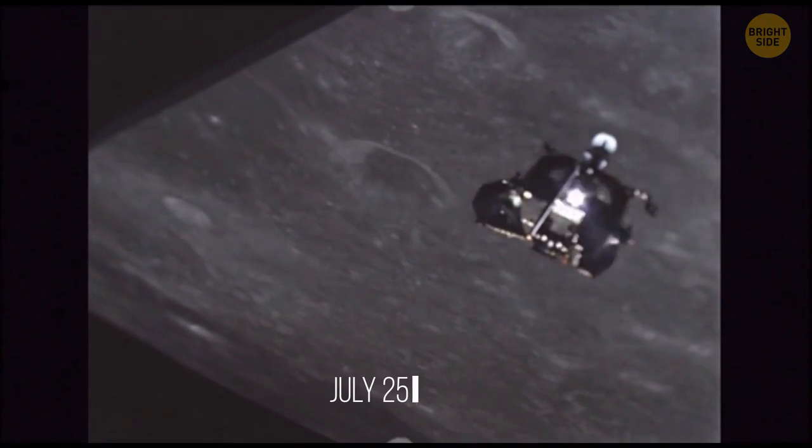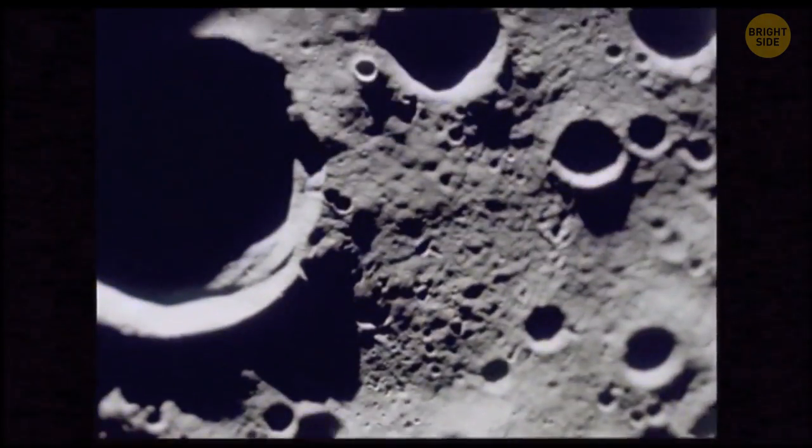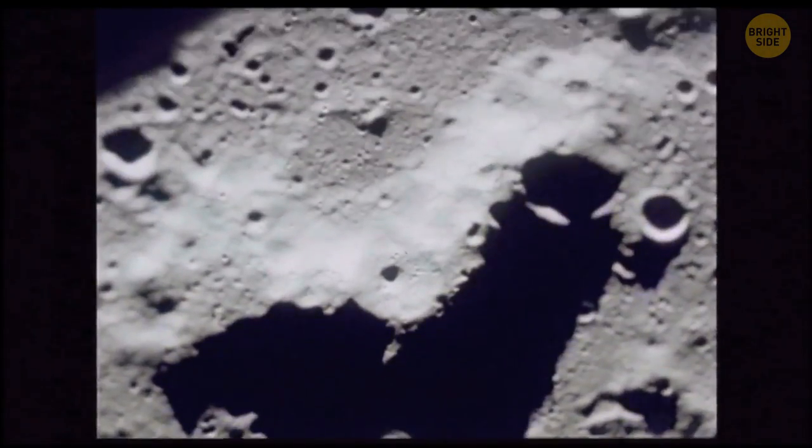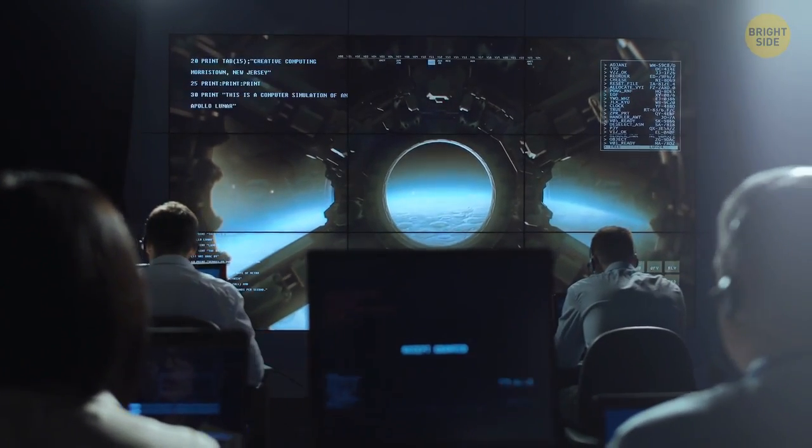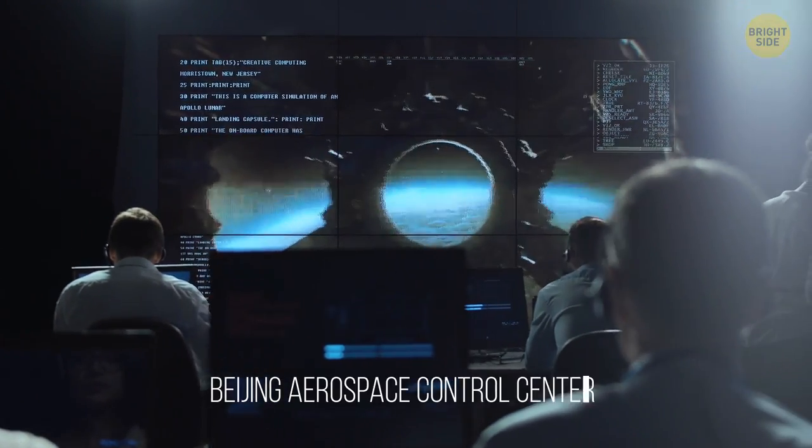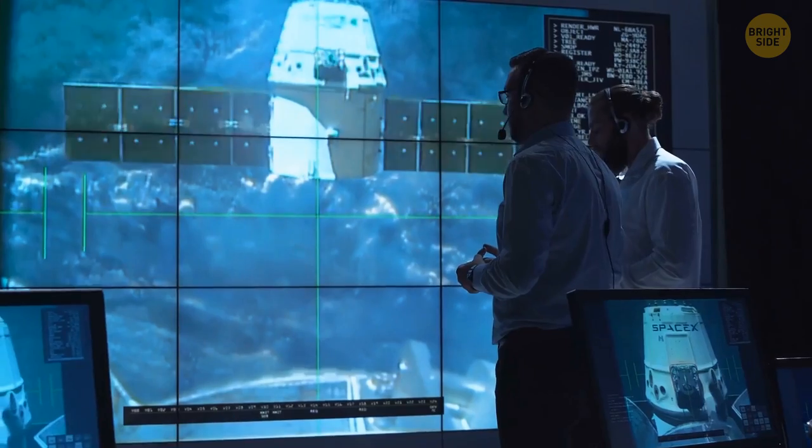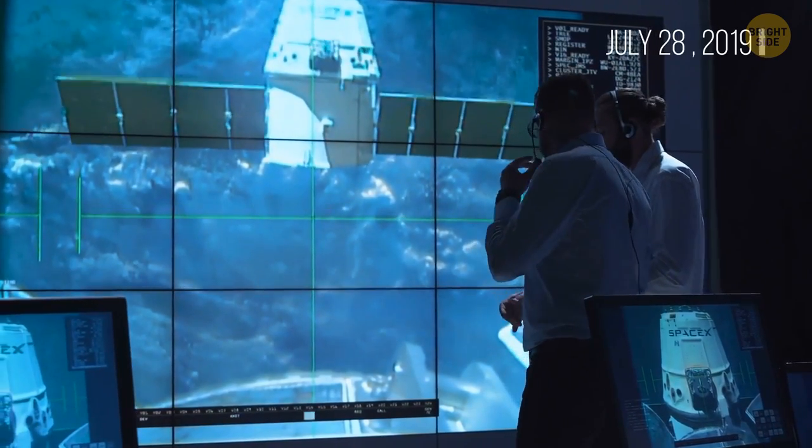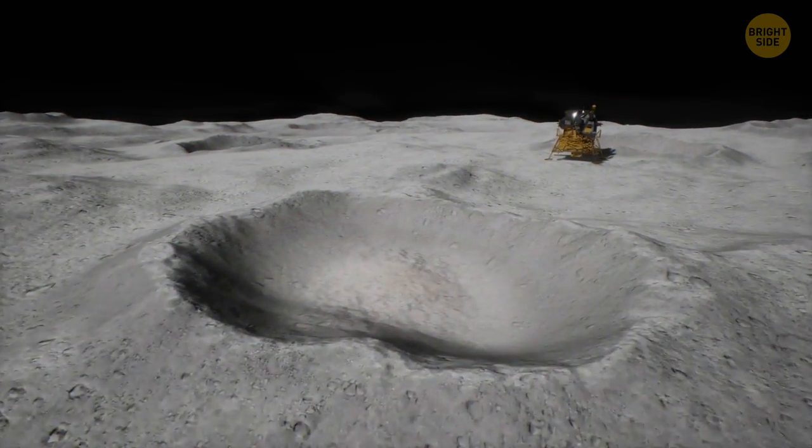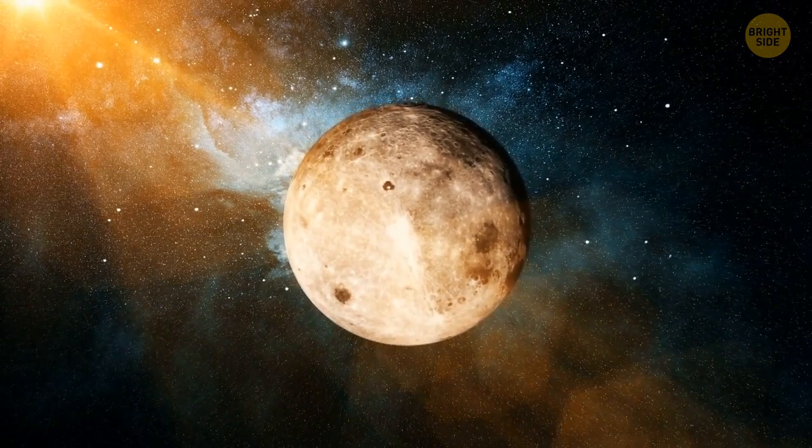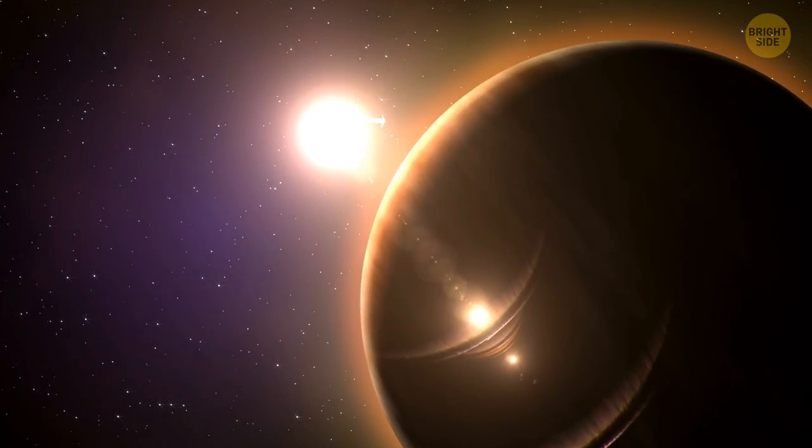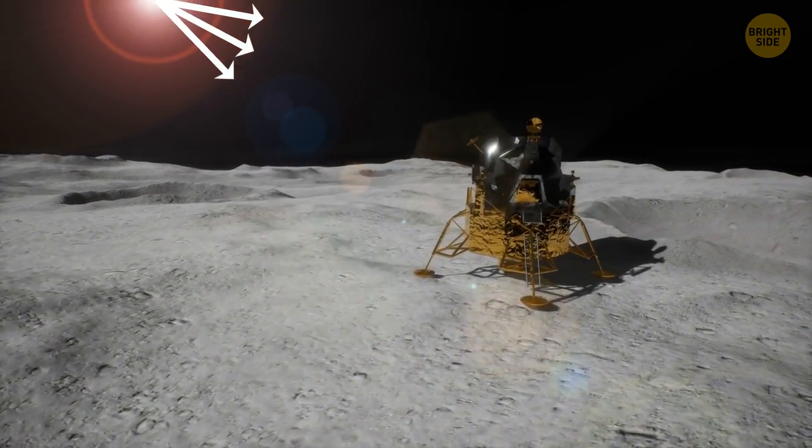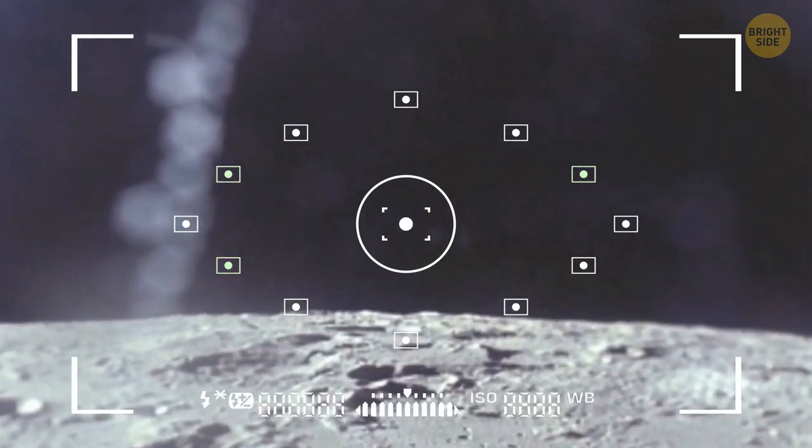It begins on July 25, when the rover starts making its way through an area pockmarked with tiny impact craters. Chang'e-4 is helped and monitored by the driver team from the Beijing Aerospace Control Center. On July 28, the team is preparing to shut the rover down for a midday nap. The sun is high in the sky, which means there are high levels of radiation and scorching temperatures that can damage the machine.